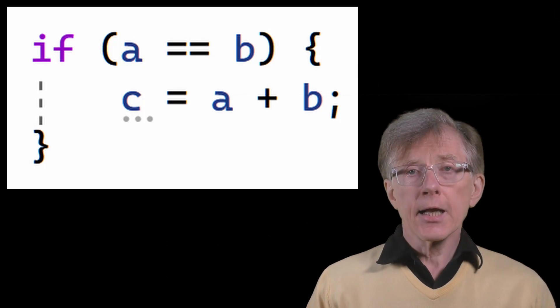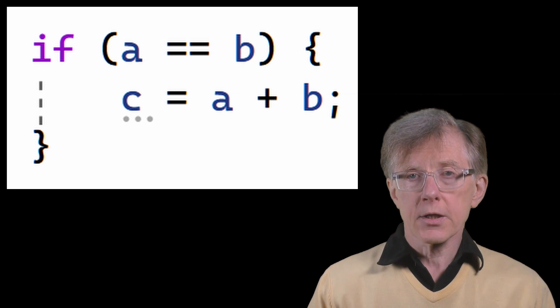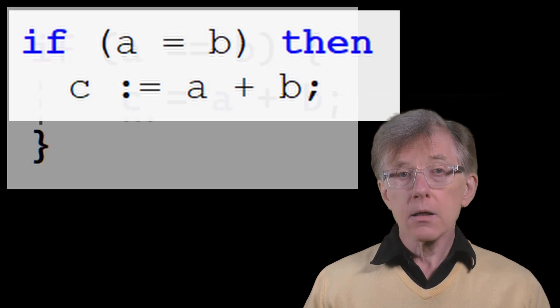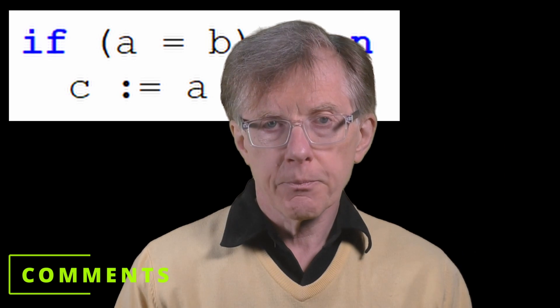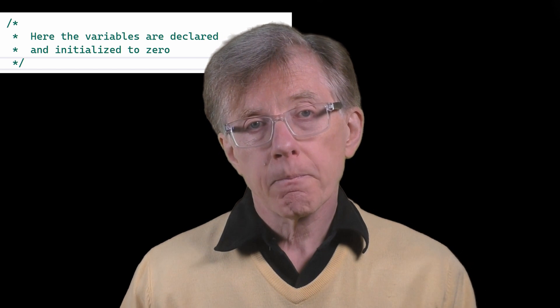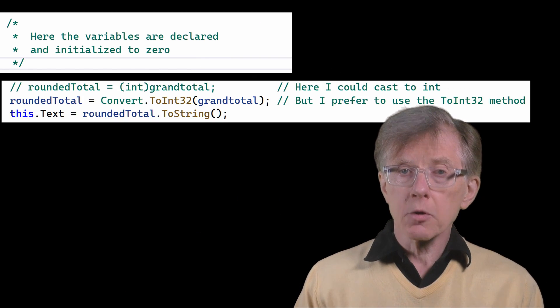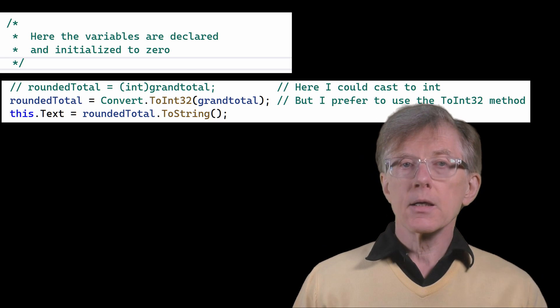Programming languages also need operators to test for equality. Is variable one equal to variable two? In C-like languages such as C-sharp and Java, two equal signs are used to test for equality, but in Pascal, a single equal sign is used. Comments. Another thing you'll see often in program code is a comment. A comment is a piece of explanatory text which is ignored by the compiler. Different languages use different comment delimiters. Most C-like languages mark multi-line comments between pairs of backslash and asterisk symbols. A single line comment is marked with a pair of double backslashes, and the comment ends at the end of the line.